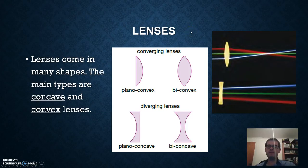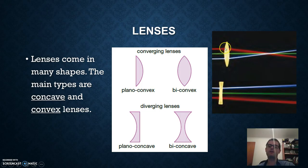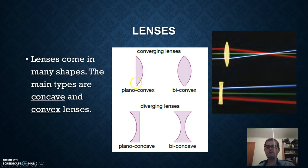There are many kinds of lenses but we only need to know two: concave and convex. Convex lenses curve outwards, and when light passes through them the light converges — gets focused — to a point. There are two types: a plano-convex lens which is flat on one side and convex on the other, and a bi-convex lens which is curved on both sides. When we say convex lens, we mean the bi-convex lens.